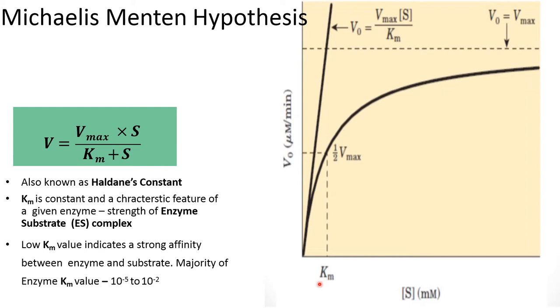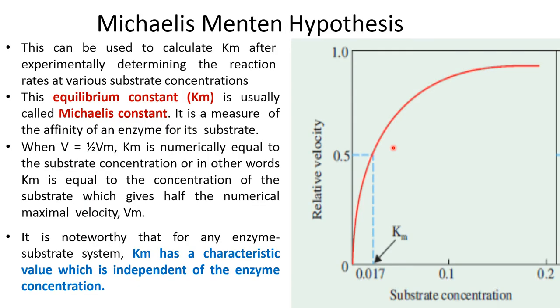Majority of enzyme KM values will be 10 to the power of minus 5 to 10 to the power of minus 2. This KM can be used to calculate the KM after experimentally determining the reaction rate at various substrate concentrations.